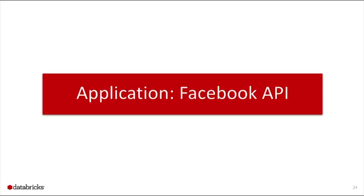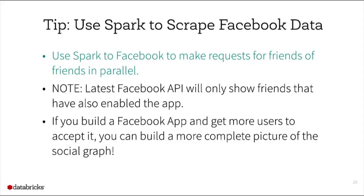Now the Facebook application. I grabbed my list of friends and then friends of friends, which quickly increases the number of API calls — great to parallelize with Spark. One caveat: the app only shows friends who have also enabled it. I was only able to get one access token — my own. With a real app and more users granting access, you'd have a much more complete view of the graph.